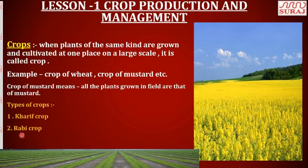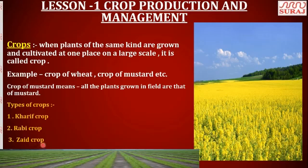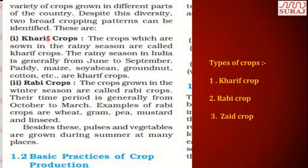So what are the types of crops? There are mainly two types of crops: Kharif crops and Rabi crops. In India, there is also a third type called Zaid crops. Zaid crops are short-season crops, which we will study later.